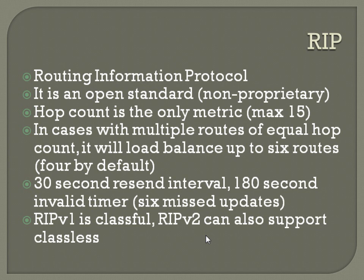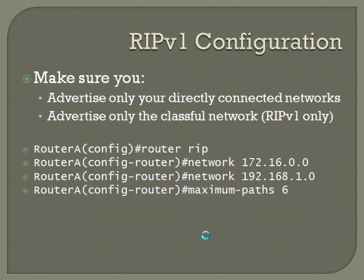The router wasn't brought in today to show the configs live — it's only a few lines. Next time, a couple of routers will be available to demonstrate both RIP and EIGRP configurations and see how they traverse the network. For RIP version 1 configuration, make sure you advertise only your directly connected networks.